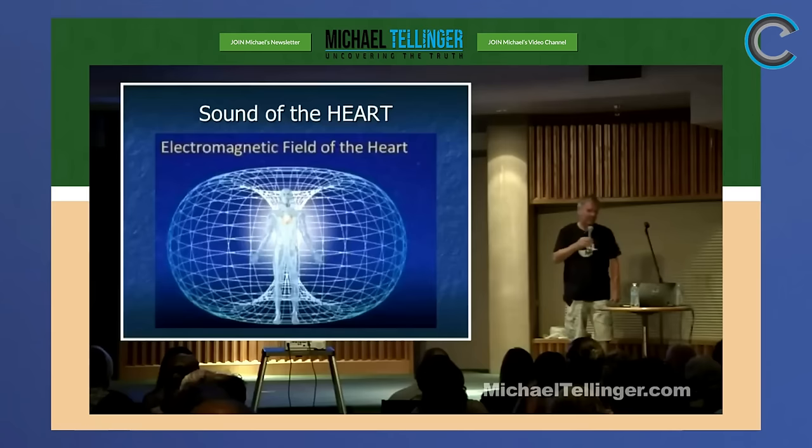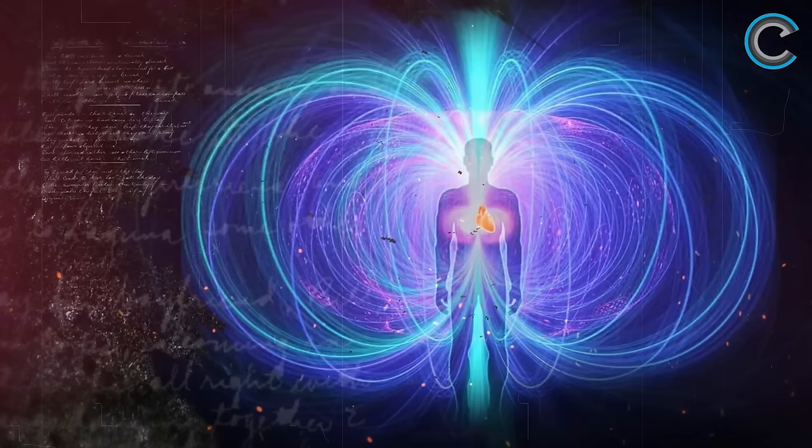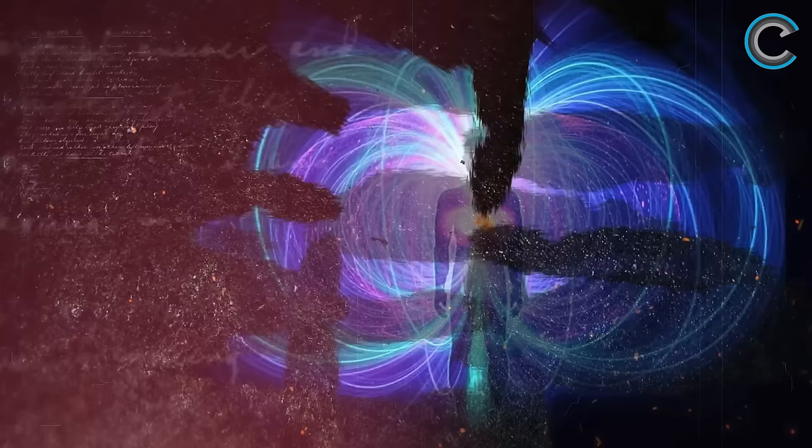Everything manifests as a torus in a toroidal field, including sound. This is what sound looks like when it manifests as a toroidal field. When our hearts beat, we create a toroidal field around our body and that toroidal field creates an electromagnetic field around our body.